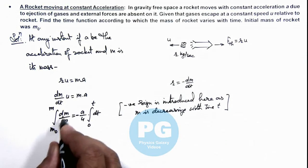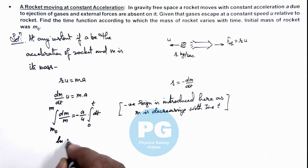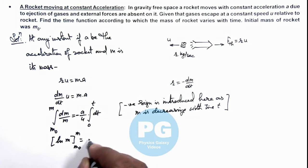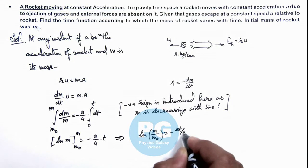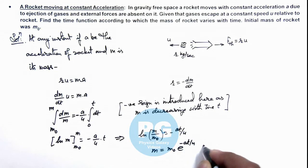On integrating this gives ln(m/m₀) = -aᵧ×t/u. We can write m = m₀×e^(-aᵧ×t/u), which is the result of this problem - the mass of rocket as a function of time.